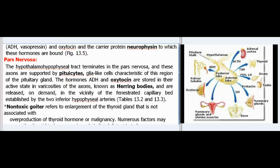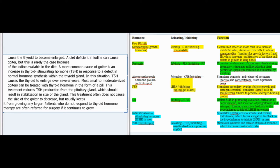Non-toxic goiter refers to enlargement of the thyroid gland not associated with overproduction of thyroid hormone or malignancy. Numerous factors may cause the thyroid to become enlarged. A diet deficient in iodine can cause goiter, though this is rarely the case given iodine availability in the diet. A more common cause is an increase in thyroid-stimulating hormone (TSH) in response to a defect in normal hormone synthesis within the thyroid gland, causing the thyroid to enlarge over several years. Most small to moderate-sized goiters can be treated with thyroid hormone in pill form, reducing TSH production from the pituitary. Patients who do not respond to therapy are often referred for surgery if the thyroid continues to grow.